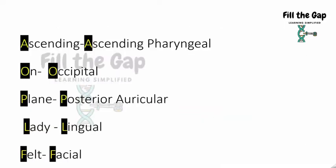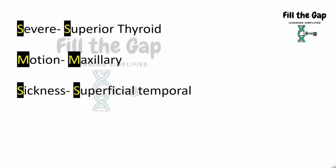So ascending stands for ascending pharyngeal, on for occipital, plane for posterior auricular, lady for lingual, felt for facial, severe for superior thyroid, motion for maxillary, sickness for superficial temporal.